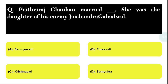Next question: Prithviraj Chauhan married Desh, who was the daughter of his enemy Jai Chandra Gahadavala. Options: A: Sayumwati, B: Purvati, C: Krishnawati, D: Sanyogita. The correct answer is option D.